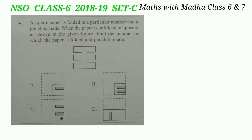Question 4: a square paper is folded in a particular manner and a punch is made. When the paper is unfolded it appears as shown in the given figure. Find the manner in which the paper is folded and the punch is made. Look at the figure carefully — the correct answer will be option A.